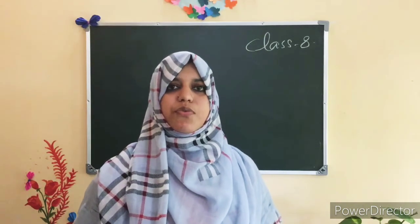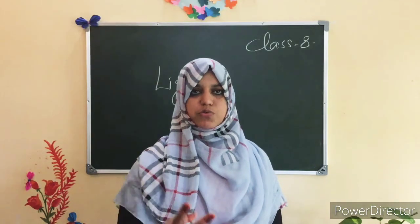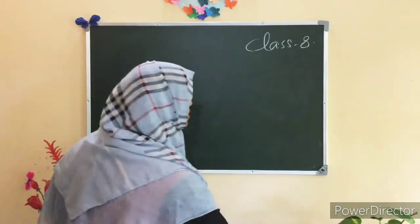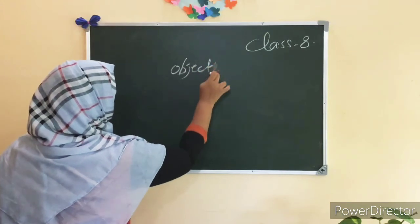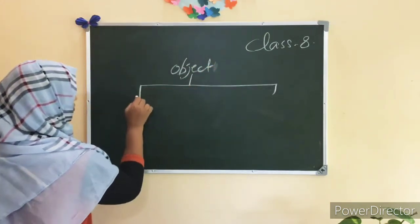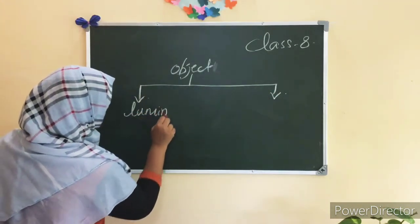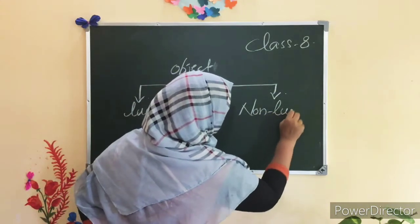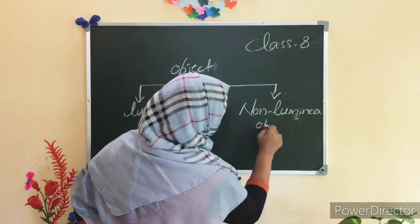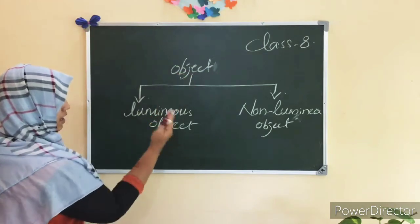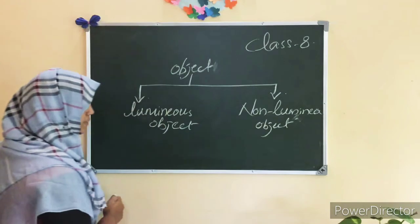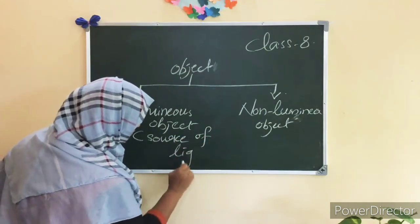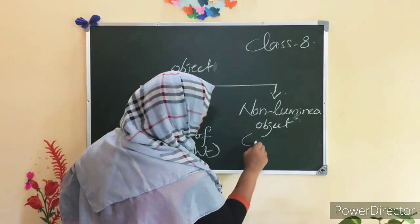The light may have been emitted by the object or may have been reflected by it. From this, we can classify objects into two types: luminous object and non-luminous object. Another name for luminous object is source of light, and another name for non-luminous object is illuminated object.